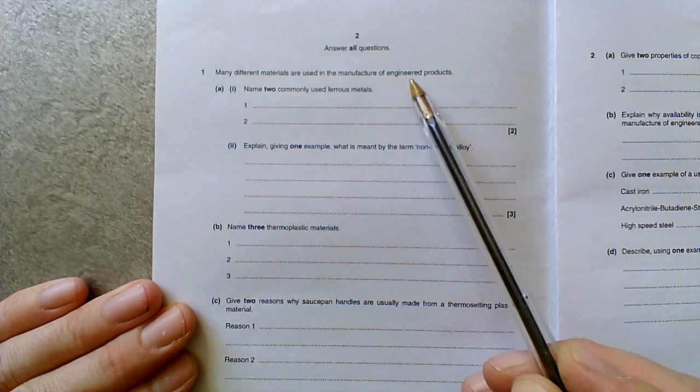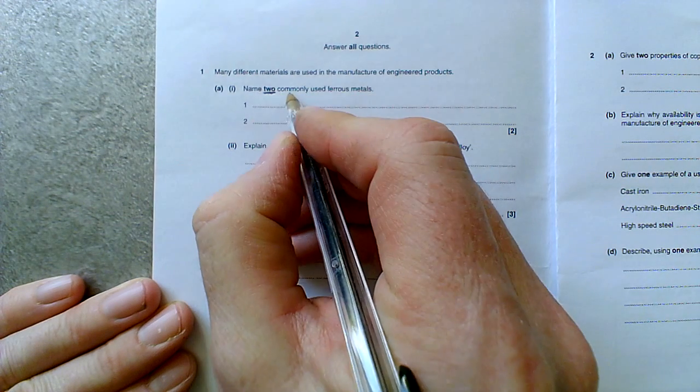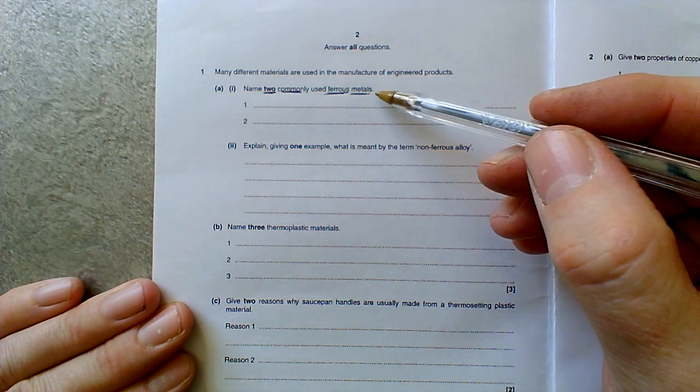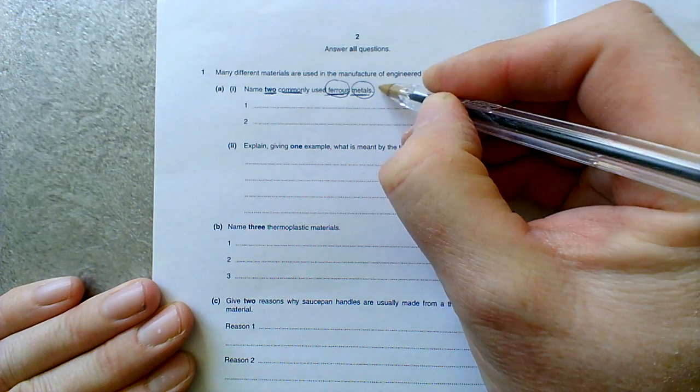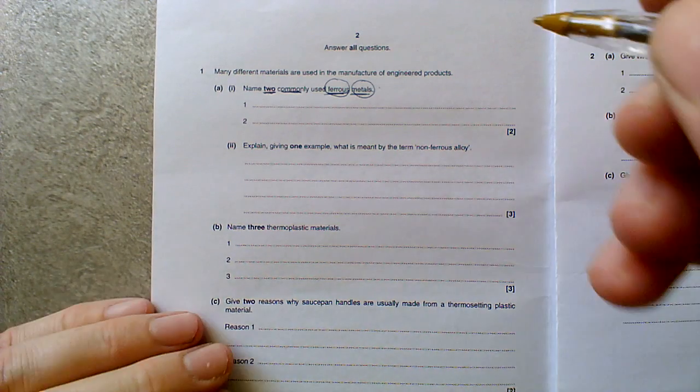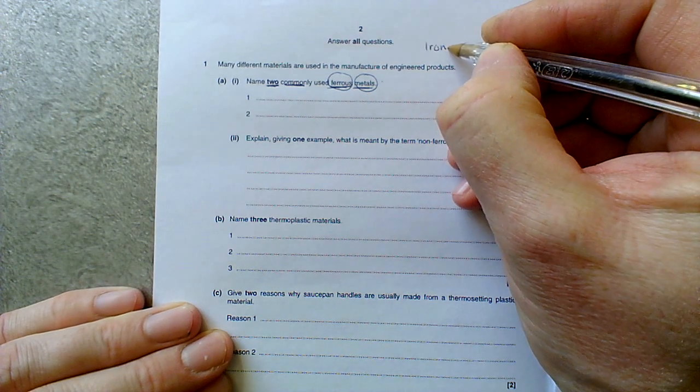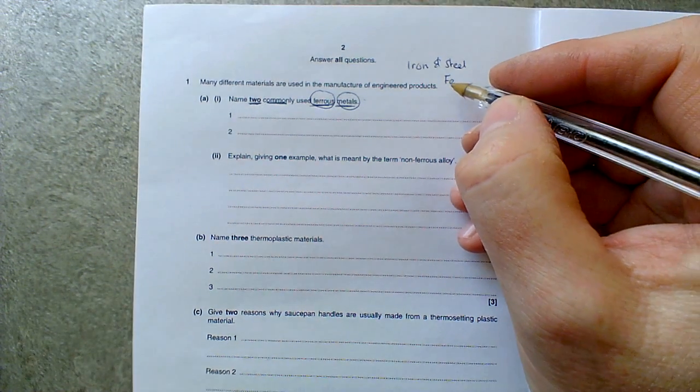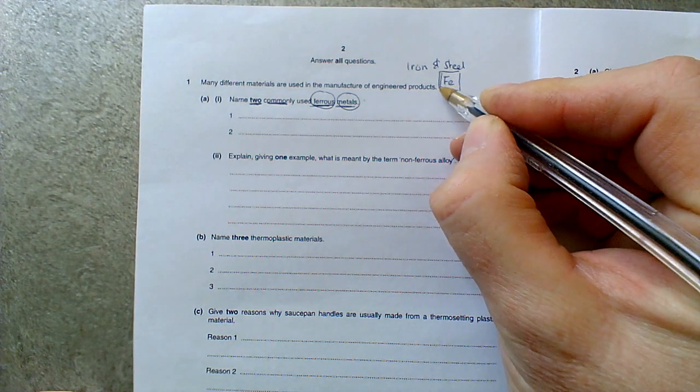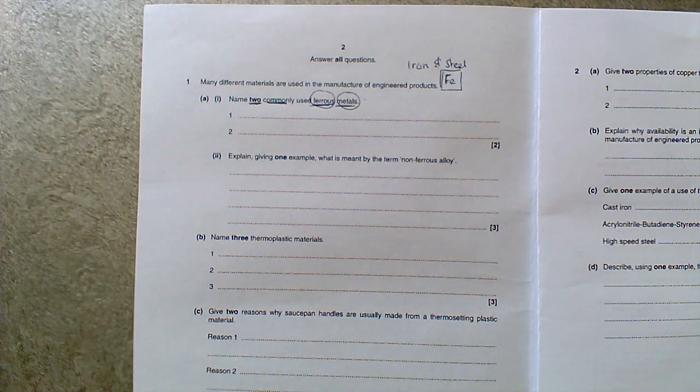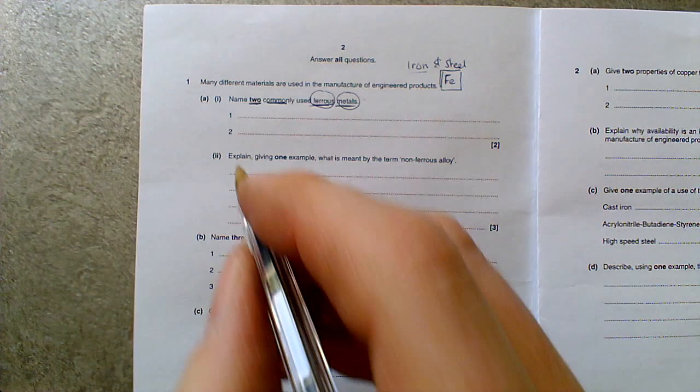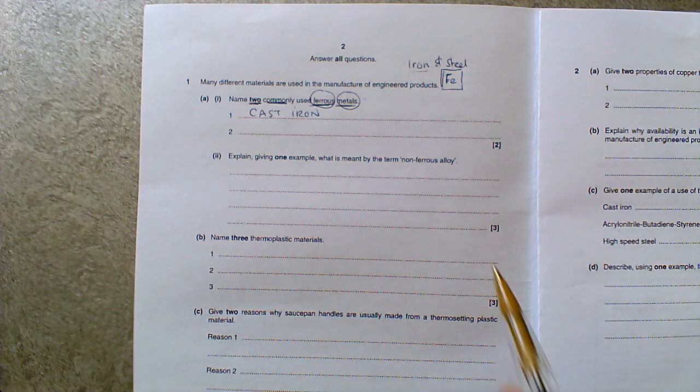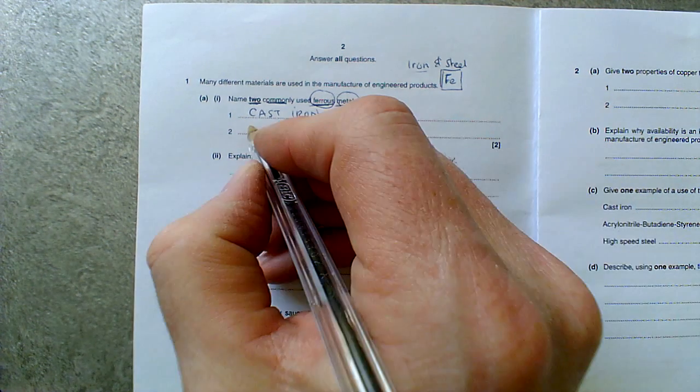Many different materials are used in the manufacturing of engineered products. You'll notice I'm actually using my pen to go through and look at each word in the question. Name two common ferrous metals. So this is where you need to be using your revision so that you can remember what is a ferrous metal. Iron and steel. I know that they are ferrous metals because the symbol for iron, if you've done your chemistry and your physics and your sciences, the symbol is FE, ferrous metal. It's a common one. Now, we don't like the word iron by itself because there are different types of iron. We like to use the term cast iron. And by the same token, there are lots of different types of steel. So, a common one for us would be mild steel.